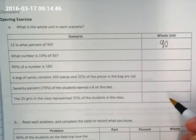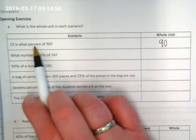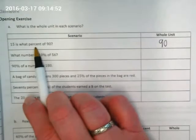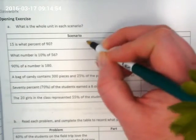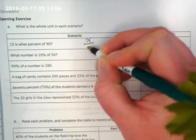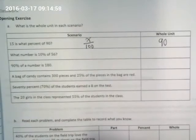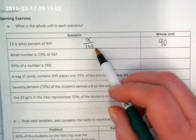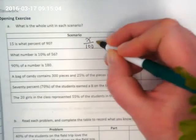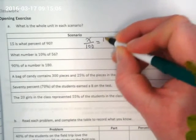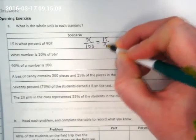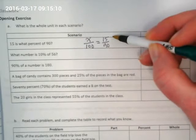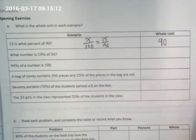And let's think about how we would use that information to set up a proportion. Do we know what the percent is? That's what the question is here. So we would put X over 100 because we know whatever the percent is, it's part of 100. And it's equal to 15 over 90 because 15 is the part and 90 is the whole.